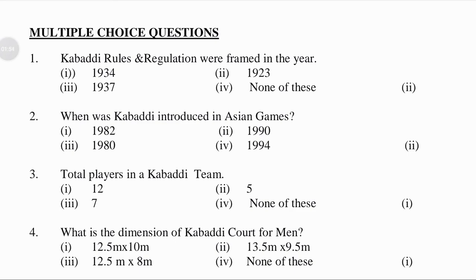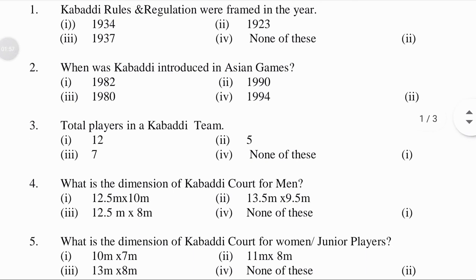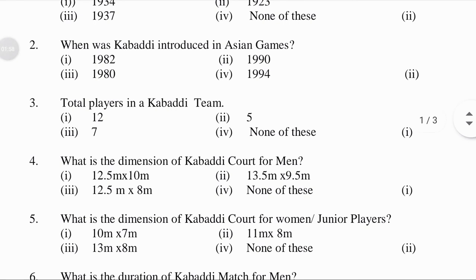When was Kabaddi introduced in the Asian Games? First option 1982, second option 1990, third option 1980, fourth option 1994. The answer is 1990, which is option number 2.